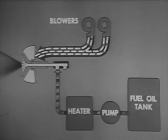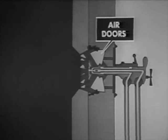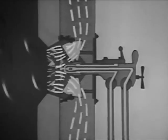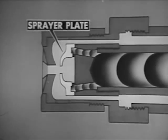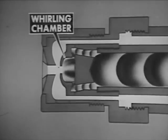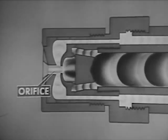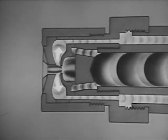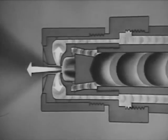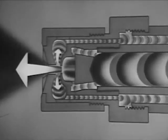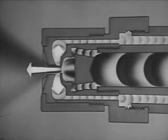In this type burner, only part of the oil that goes through the burner is actually burned. The remainder returns to the fuel oil pump. Air doors and a bladed cone give the whirling motion to the air that enters the register to mix with the oil, as in the burner seen previously. The oil, heated and under pressure, is forced through the inner tube of the burner barrel to the sprayer plate, where the oil is rotated in the whirling chamber. The oil leaves through the sprayer plate orifice. Centrifugal force sends some of the oil into the return line and back to the fuel oil pump. The remaining oil continues through the orifice into the furnace. At the burner's maximum firing rate, practically all the oil enters the furnace. At the minimum firing rate, practically all the oil returns to the pump.